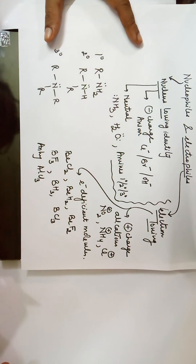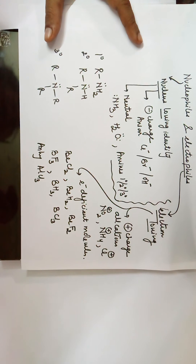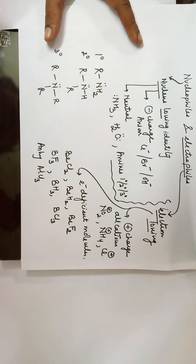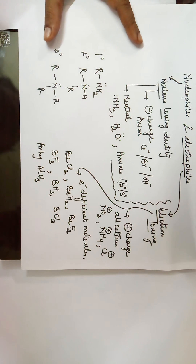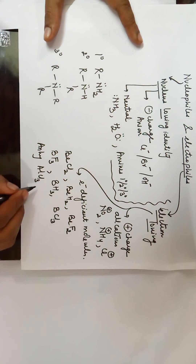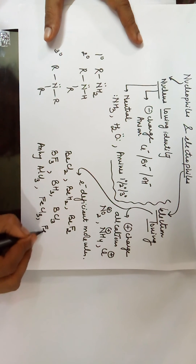Anhydrous AlCl₃ is a covalent compound of aluminium. Aluminium, being small, requires a large ionization energy to lose three electrons and form an ionic bond. In aqueous medium this is compensated by hydration energy, but in the anhydrous state there is no hydration energy, so aluminium forms covalent bonds. With three valence electrons forming three covalent bonds, aluminium ends up with a sextet — only six electrons — running short by two, making it an electrophile.